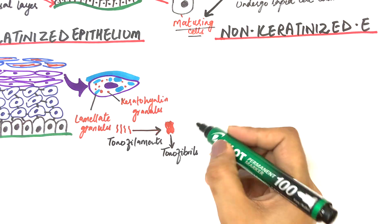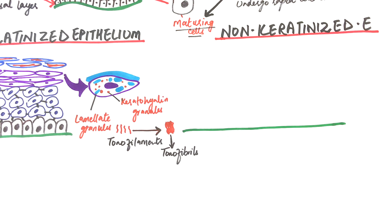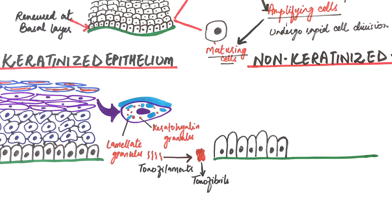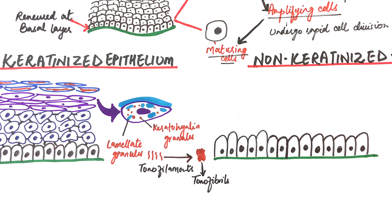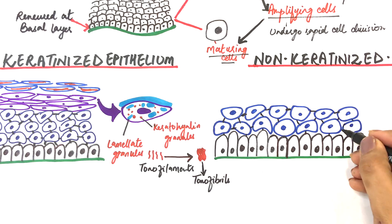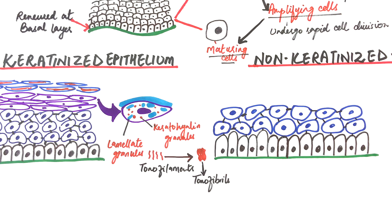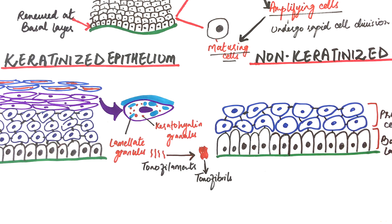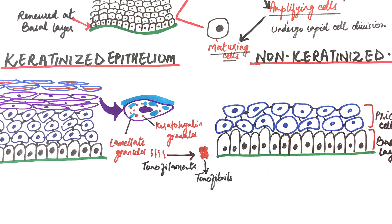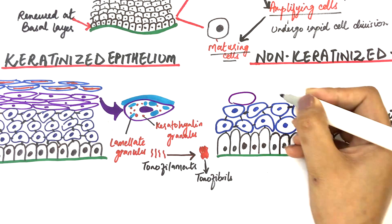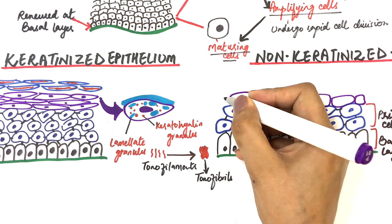The non-keratinized epithelium also contains some intermediate keratin filaments, but they differ biochemically from those in the keratinized epithelium and are sparsely distributed within the cells. In non-keratinized epithelium, the first two layers of stratum basale and stratum spinosum are almost the same as in keratinized epithelium, except that they are larger in size. The layers of stratum granulosum and stratum corneum are absent, and instead two different layers are present: the stratum intermedium and stratum superficiale.